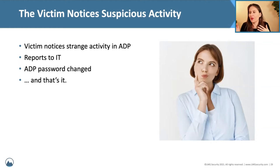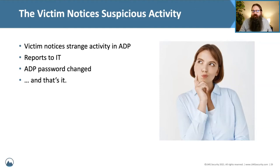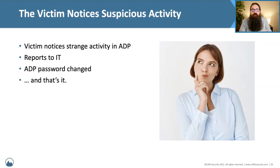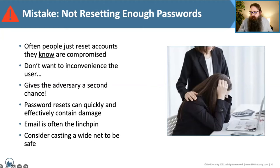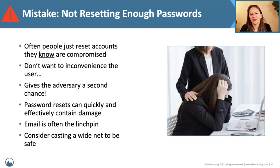In this case, there was a password reuse situation, but the victim noticed strange activity in ADP — that spider sense that something was going wrong. She did exactly what she should have done: she reported it to IT. They changed her ADP password only and moved on, figuring if something was weird with ADP, resetting it would get things back to a secure state. The lack of a full view of a situation becomes a problem when trying to quickly remediate — this is a pretty common mistake.